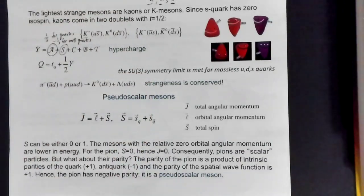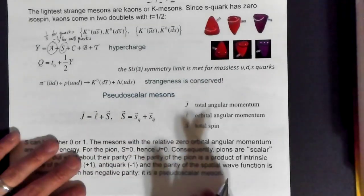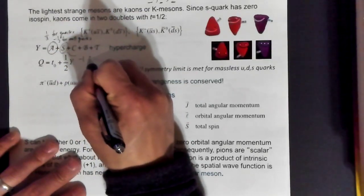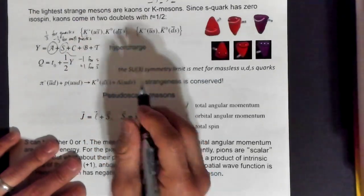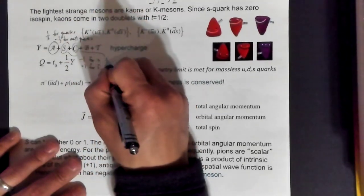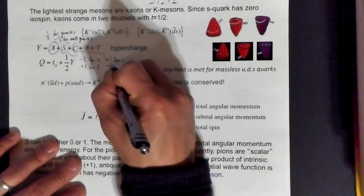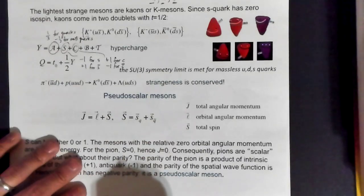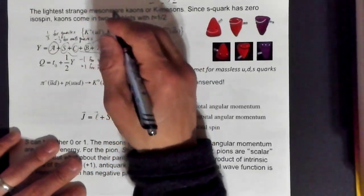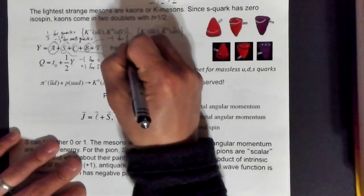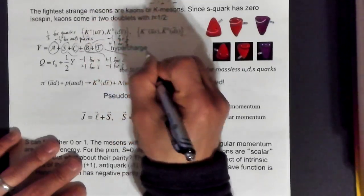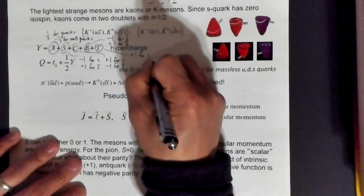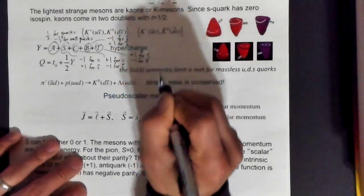Strangeness is simply a way of counting how many strange quarks you have. The convention is a little odd: you get -1 for a strange quark and +1 for an anti-strange quark. Charm goes in the correct way: +1 for charm, -1 for anti-charm. Bottom is backwards again: -1 for bottom, +1 for anti-bottom. Top is +1 for top and -1 for anti-top.